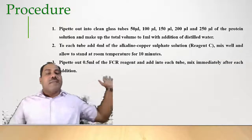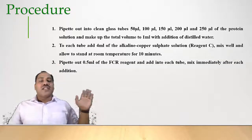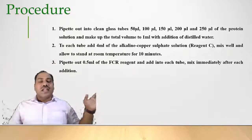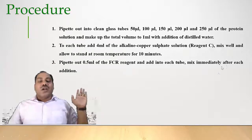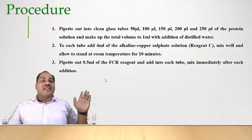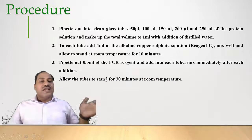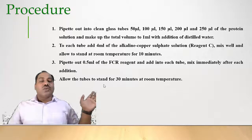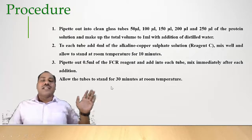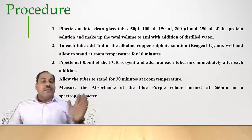Next, pipette out 0.5 ml of Folin-Ciocalteau reagent and add it into each tube, mixing immediately after each addition. Then allow the tubes to stand for 30 minutes at room temperature. Measure the absorbance of the blue color formed at 660 nanometers using a spectrophotometer, and prepare a blank tube similarly.